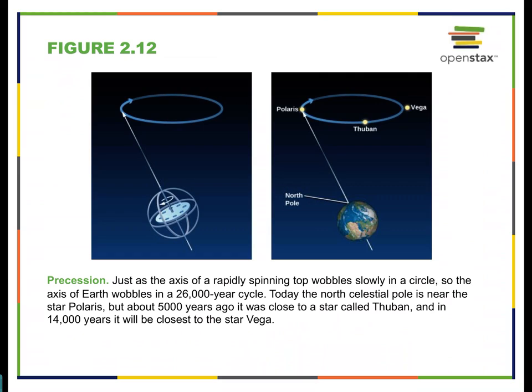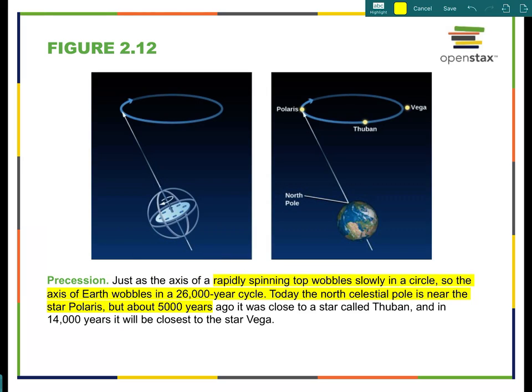The Earth precesses as it rotates — a very slow process that takes 26,000 years. This means that the constellations don't stay fixed. The constellations we see today will not be the same constellations visible many thousands of years from now.